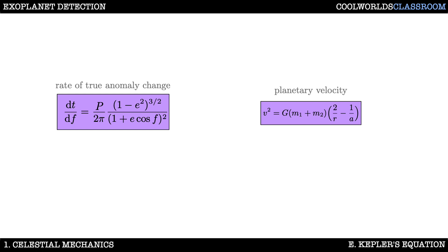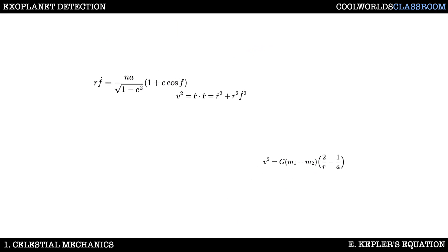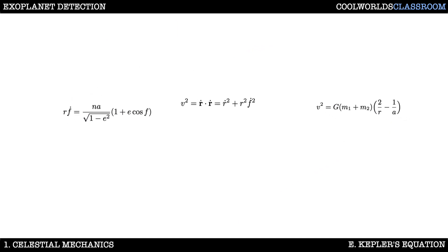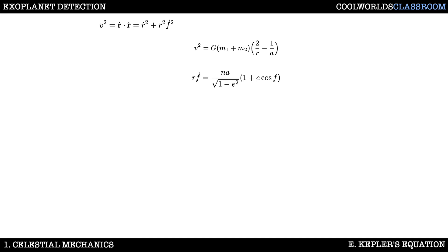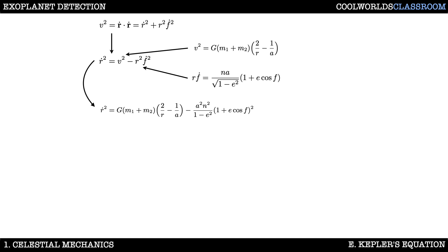We have now obtained df/dt and dr/dt, but we haven't yet described a system for going from f to time. To do this we need to write r-dot in terms of just r so that we can solve the equation. Let's take these three results to a new slide. By simple rearrangement we can write r-dot squared, and the terms on the right-hand side are things we now have solutions for, so let's plug them in. Remember, we're trying to write everything in terms of r.